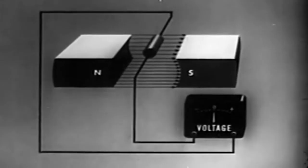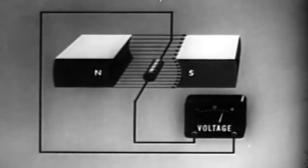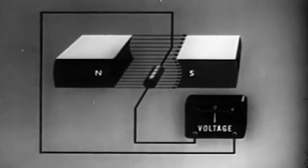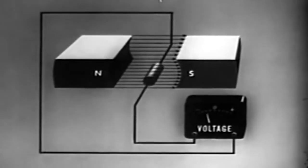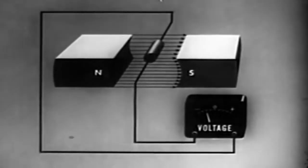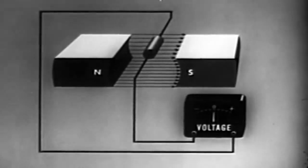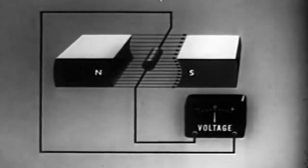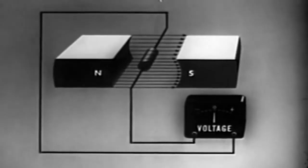Moving the conductor down through the field makes the needle of a voltmeter deflect one way, which means the EMF has one direction. Moving the conductor up through the field produces the opposite deflection of the needle — the EMF has now changed direction. Moving the conductor back and forth with the field does not make the needle deflect; there is no EMF because the conductor is not cutting the field.